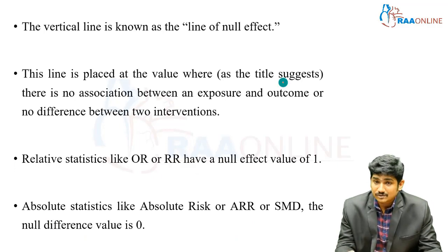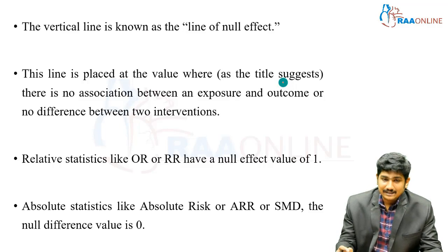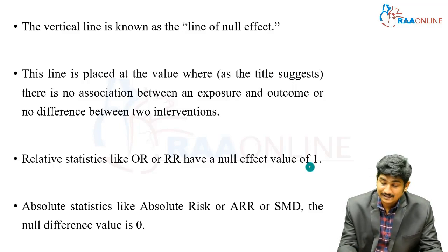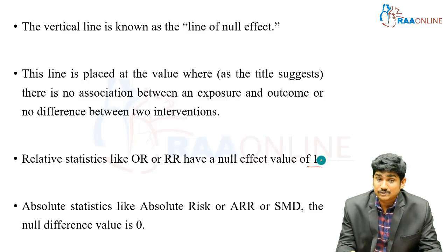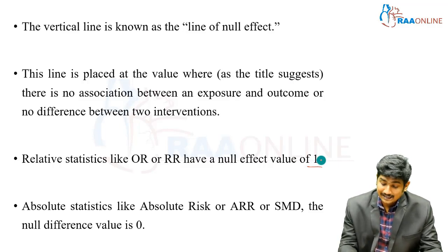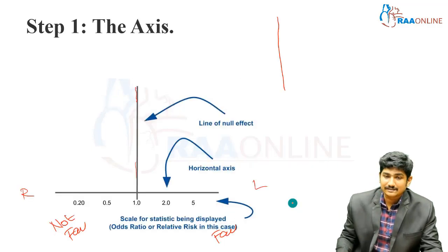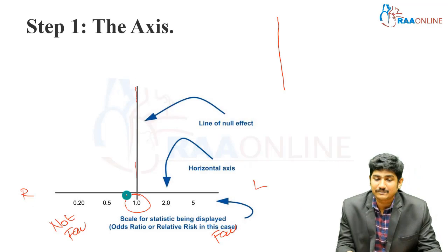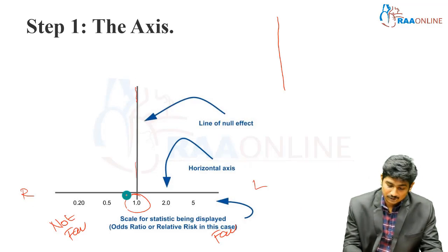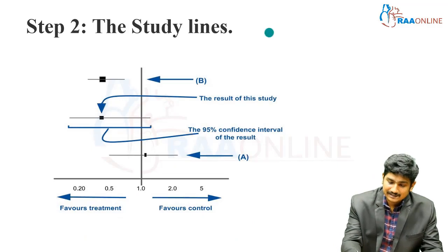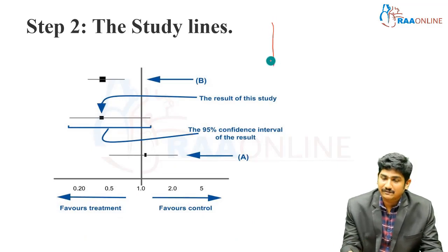The vertical line is placed at the value where there is no association between exposure and outcome, or no difference between the two interventions under study. Relative statistics like the OR or RR have a null effect value of one. Absolute statistics like AR, ARR, or SMD have a null difference of zero. So in certain plots, the center value is marked as 1.0 and in others as 0.0.